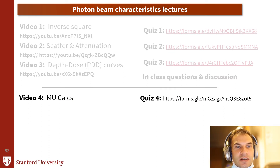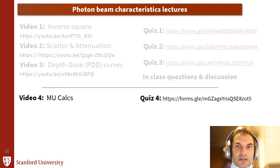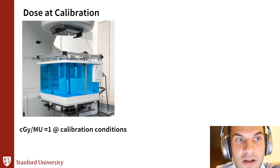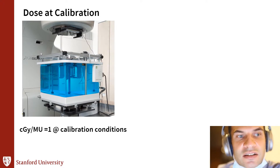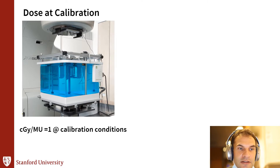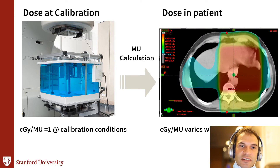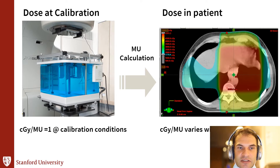So we've been through inverse square law, scatter attenuation, and depth dose curves. Physicists do dose calibration conditions in a water tank, and we ensure that the dose per monitor unit at these calibration conditions equals 1. But the difficulty is that a patient is not made of water, always at SSD 100, and always a 10 by 10 field size. So the dose per MU in the patient in the target volume varies — that's where the MU calculations come in.